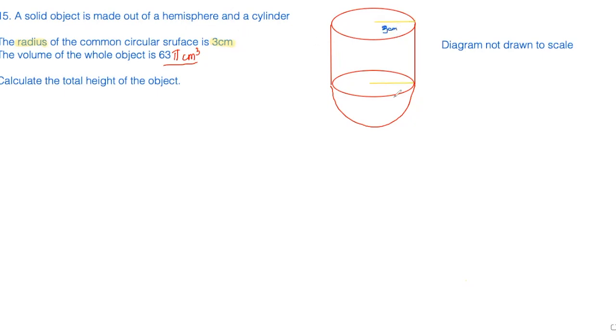Whatever the information you are given, it's really important that you label that in your diagram. That way you can see the information clearly and you can also plan. It helps you with the next steps of the solution.